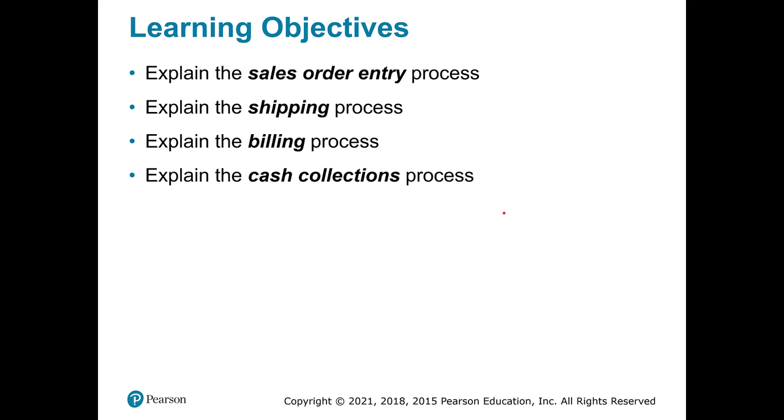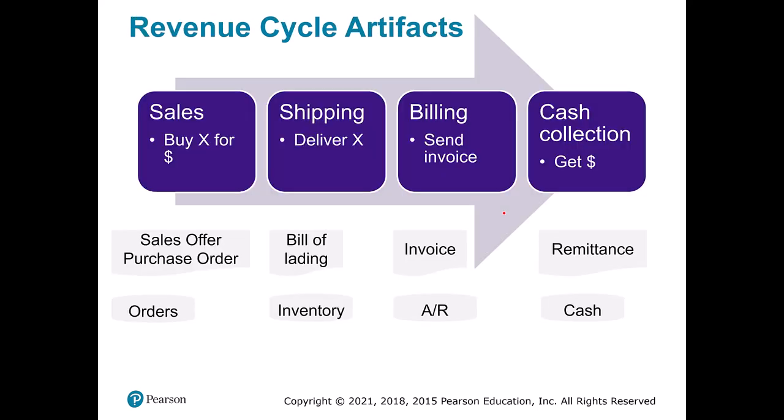At each point along the process, things are going to go wrong, and so we have to think about how we're going to track it and how we're going to respond. So let's look at the high-level view here — we have some kind of sales process where someone comes in and wants to buy something.